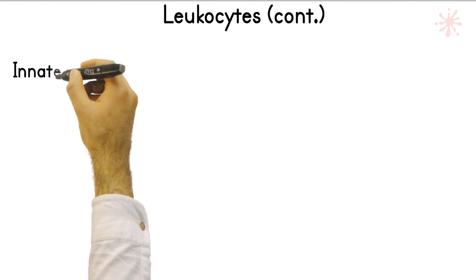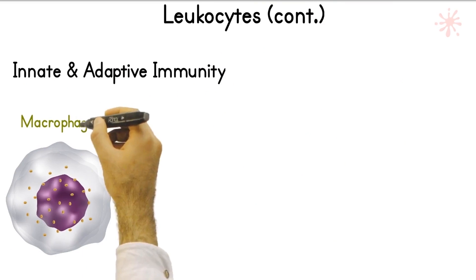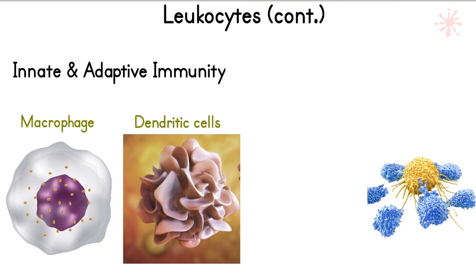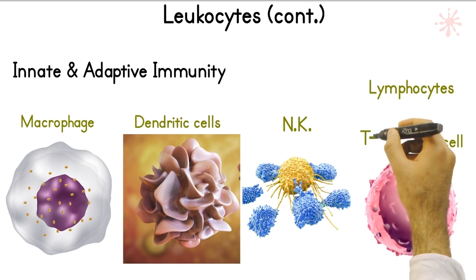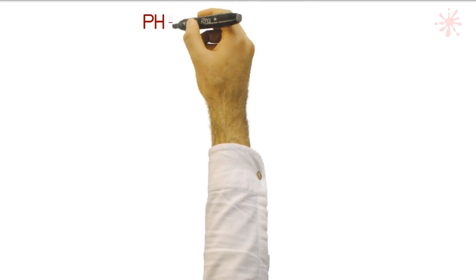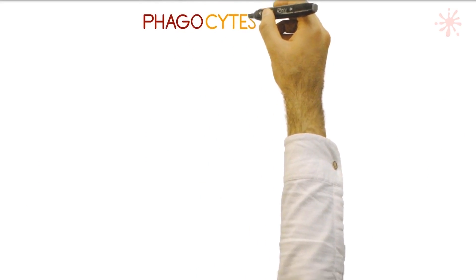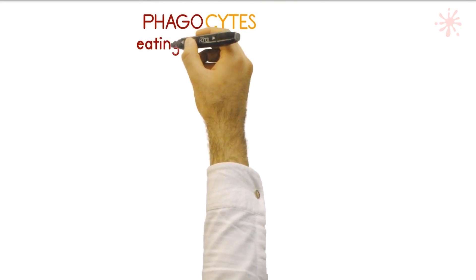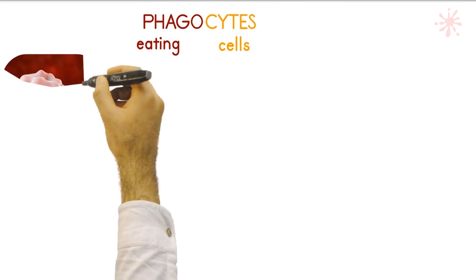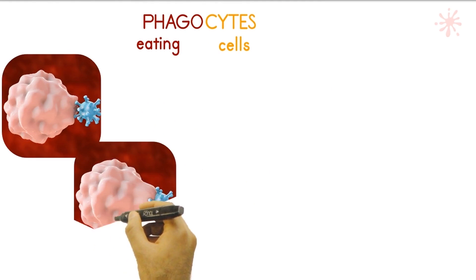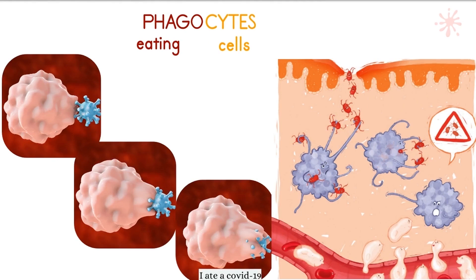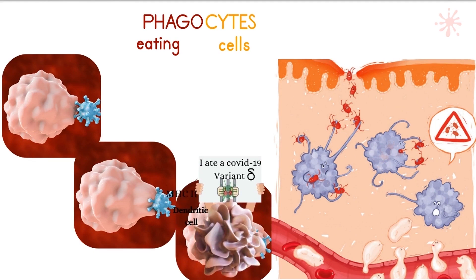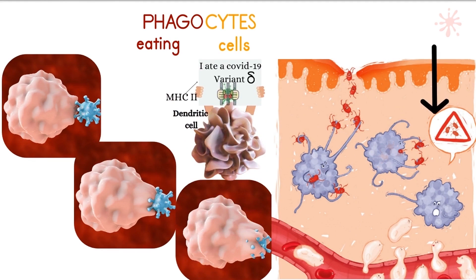The following leukocytes have a role in both the innate and adaptive systems: macrophages, dendritic cells, natural killer cells, and lymphocytes. Phagocytes are cells that perform phagocytosis — the process to kill and eat pathogens. They are highly mobile and the first cells to respond to any infection or inflammation. Macrophages, neutrophils, and dendritic cells are the most common phagocytes. Once they swallow a germ, they present the identification of those microbes — that is what we call MHC2.